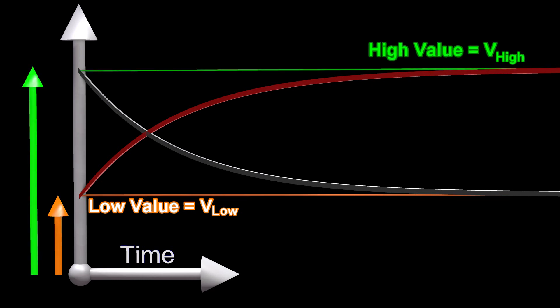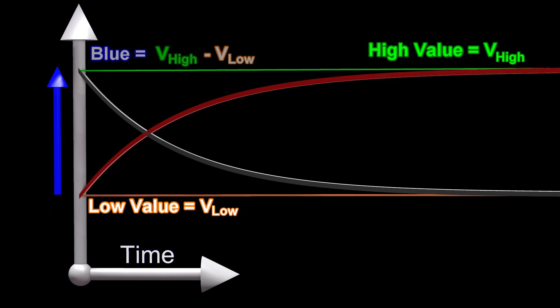The lengths of the orange and green arrows are constant. Their difference is the length of the blue arrow, which is also constant. The new equations, in terms of the length of the blue arrow, are as follows.